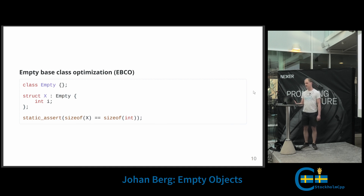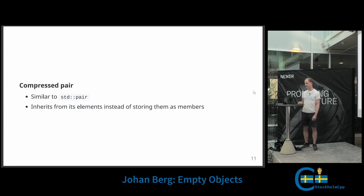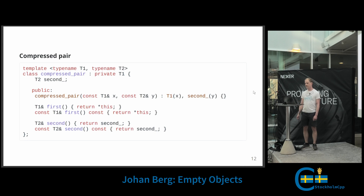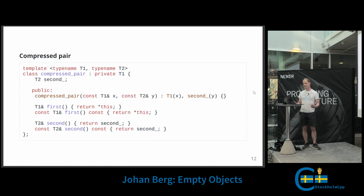So how can we use this optimization in our unique pointer? I'm going to show you a technique used by most standard library implementations — it's known as a compressed pair. A compressed pair is similar to a standard pair, but it inherits from its elements instead of storing them as members, to take advantage of the empty base class optimization. Here's a simple implementation: it has two template parameters, T1 and T2. T2 is stored as a member, but we privately inherit from T1 to take advantage of empty base class optimization. So if T1 is an empty object, its size can be optimized out. It also has a constructor and two functions to get the first and second elements.